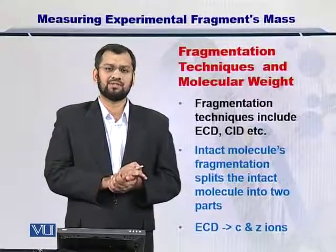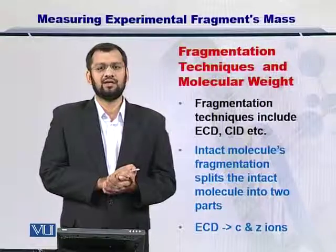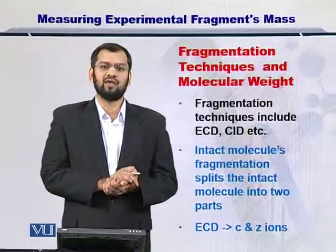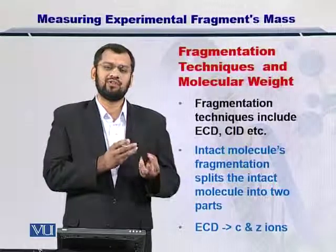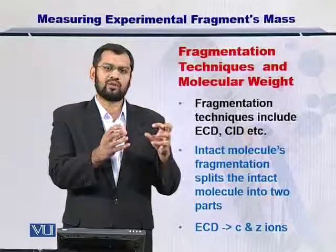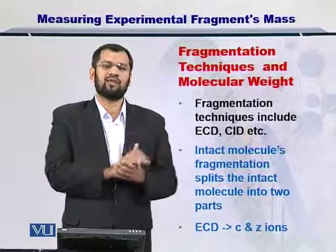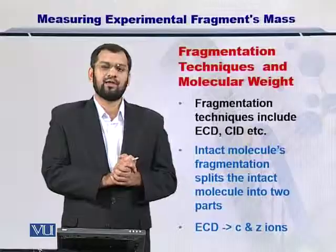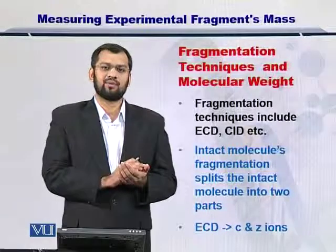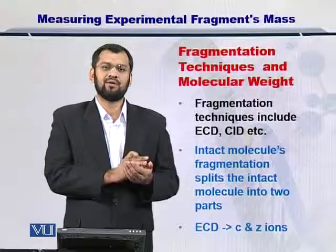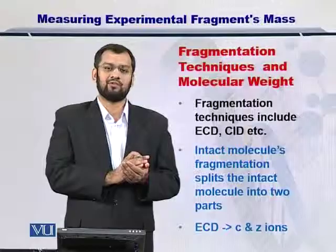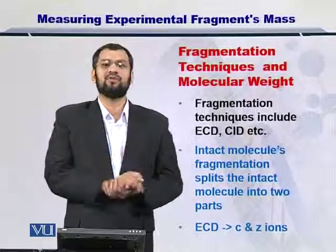After the fragmentation, for instance, CID will report B and Y ions. ECD will give you C and Z ions. These C and Z, B and Y, A and X are actually two fragments reporting from the same protein. The only reason why we give different names to these fragments is because of the location at which the backbone has been fragmented to produce these ions.